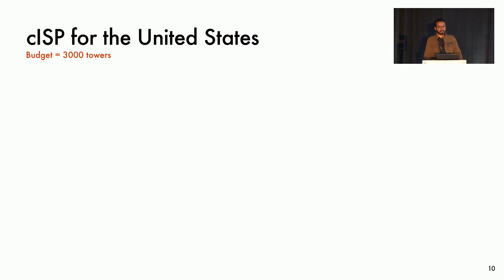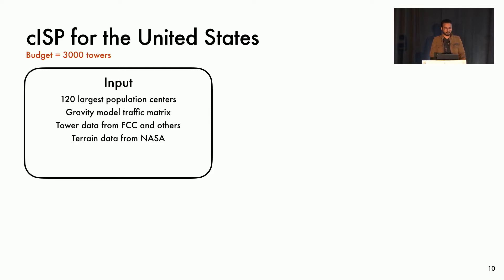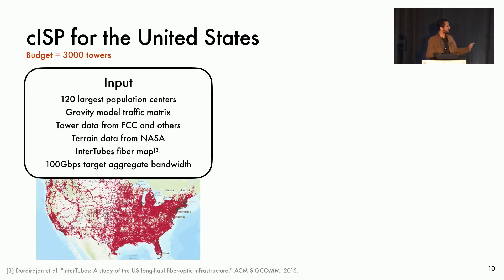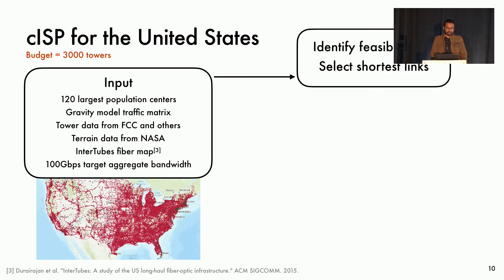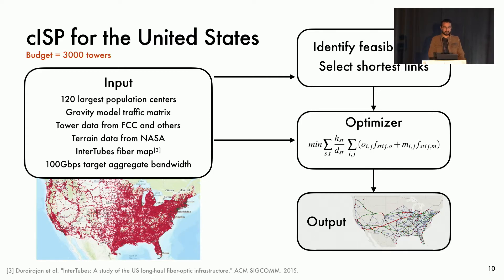Now we see what kind of network our algorithm designs for a set of concrete inputs. We design a CISP for the United States with a budget of 3,000 towers. As input, we select the 120 largest population centers in the U.S., use a gravity model traffic matrix, get tower data from FCC, American Tower, and other databases, and terrain data including buildings, tree canopy, and other ground clutter from NASA. We use the Intertubes dataset for existing fiber links, and we set an aggregate target bandwidth of 100 Gbps. From the tower database, we identify feasible hops based on height, distance, and terrain restrictions, then select the shortest links between pairs of cities. This set of links, along with the fiber links and traffic matrix, feeds into the constraint optimizer, giving us the design of a CISP for the U.S.